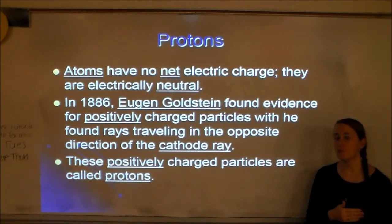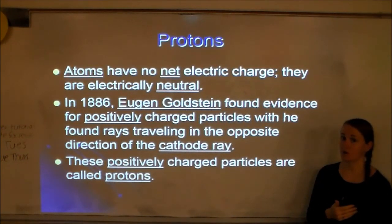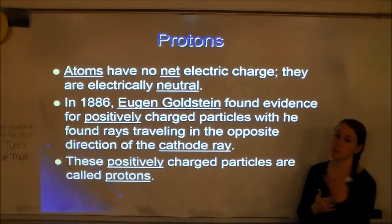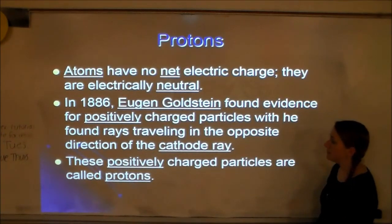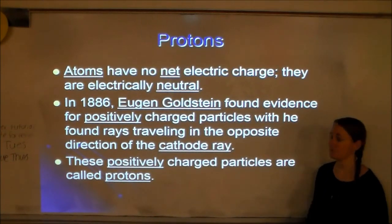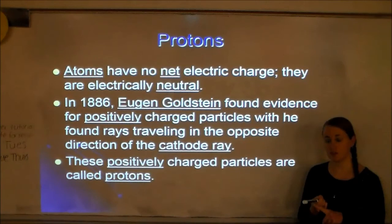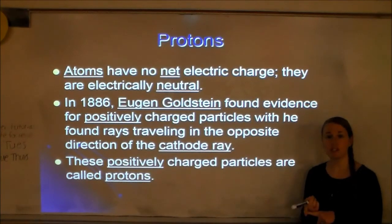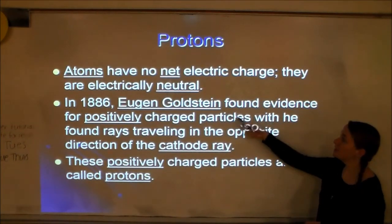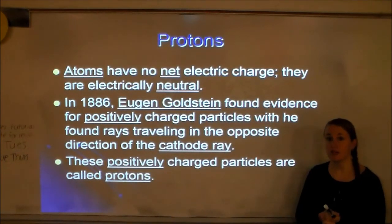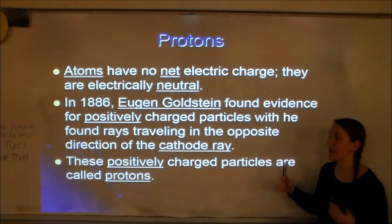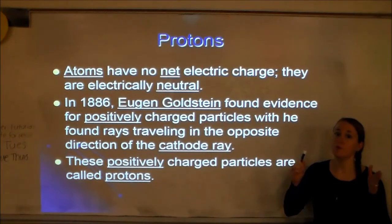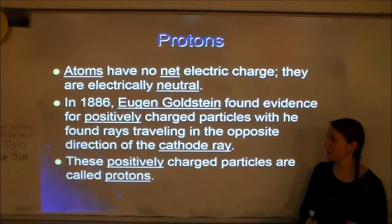If the cathode ray is traveling one way and is made of negative particles, then something going the opposite direction would be made of positive particles. So Goldstein named these positively charged particles protons. Both J.J. Thompson and Eugene Goldstein used the cathode ray tube — it was used to discover both electrons and protons.